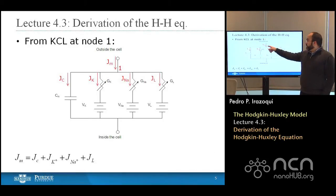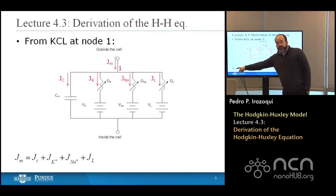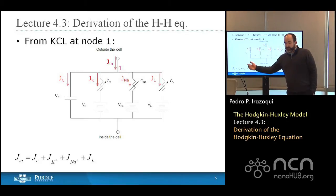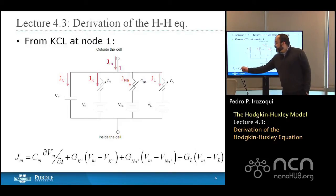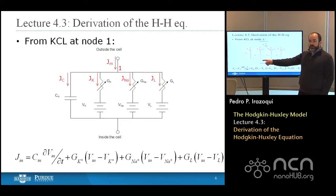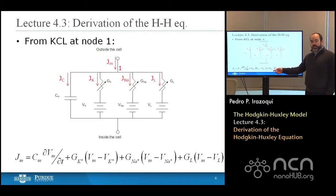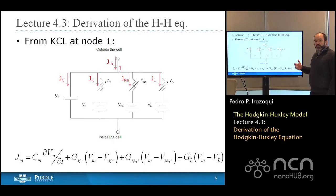We can do Kirchhoff's current law at node one and find that the membrane current density J sub m is equal to the sum of the currents in each of the four branches: J sub C plus J sub K plus J sub Na plus J sub L. Substituting in the branch currents, the membrane current density J sub m is equal to C sub m times the first derivative of the membrane voltage with respect to time, plus G sub K times (V sub m minus V sub K), plus G sub Na times (V sub m minus V sub Na), plus G sub L times (V sub m minus V sub L), where V sub L is the resting potential for those leakage ions.